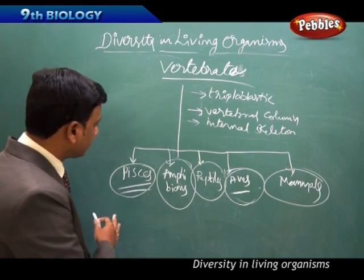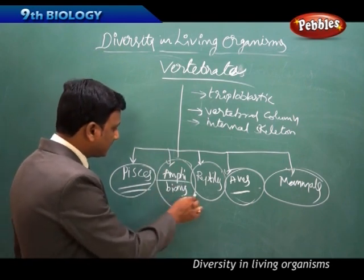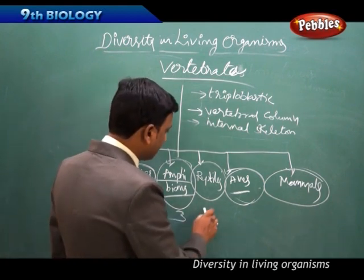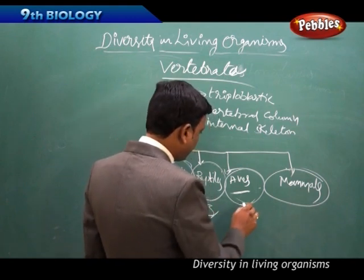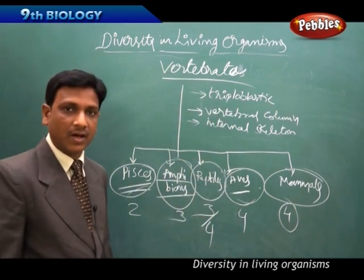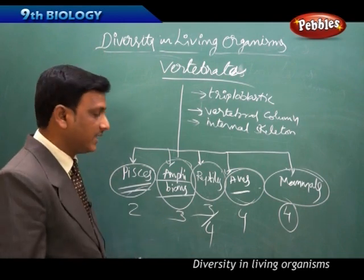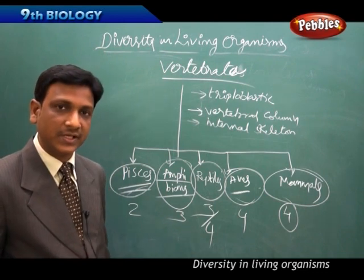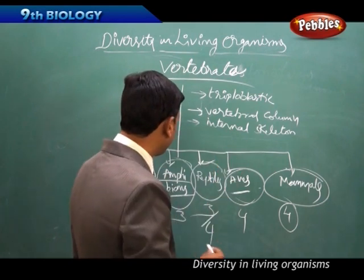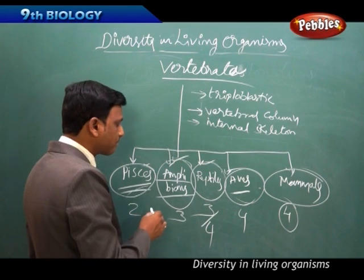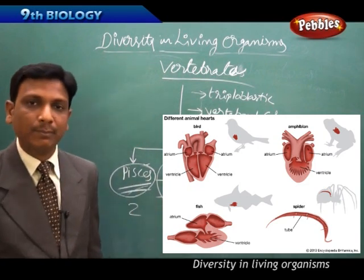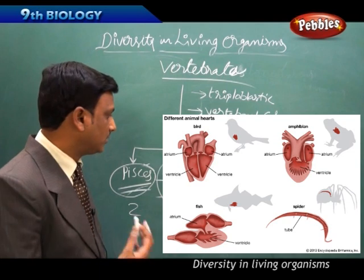Looking at the circulatory system across vertebrate groups: Pisces have a two-chambered heart, amphibians have a partly three-chambered heart, reptiles have a three-chambered (partly four-chambered) heart, and both Aves and Mammals have a four-chambered heart with a closed circulatory system. Mammals have a completely developed four-chambered heart for pumping blood throughout the body.